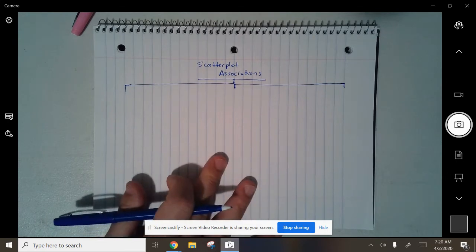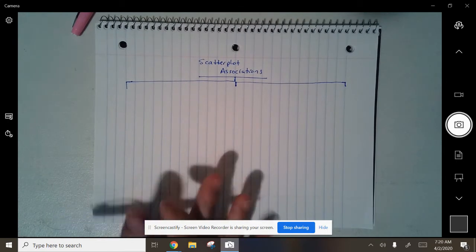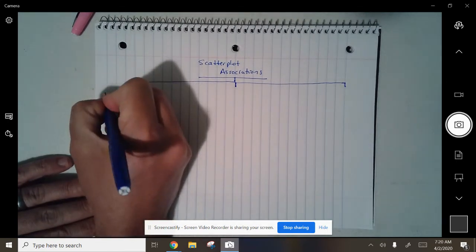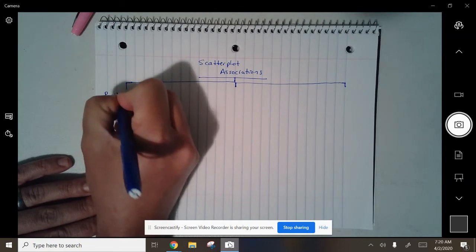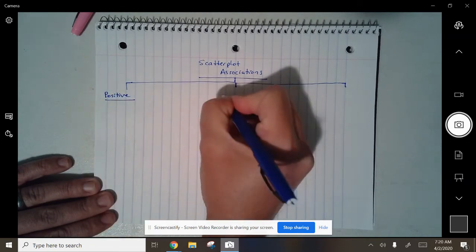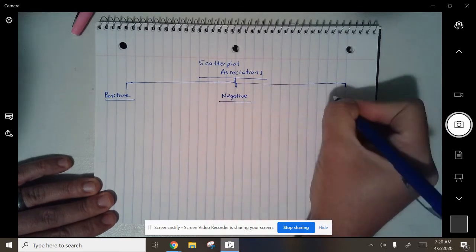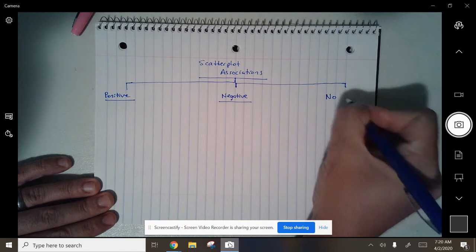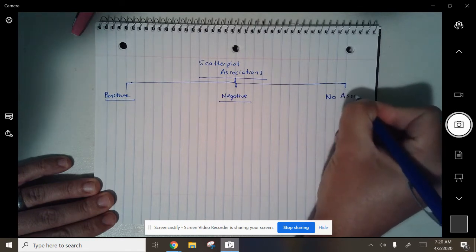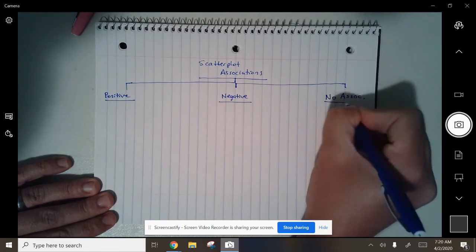So scatter plot associations. And then we'll talk about what a scatter plot is, but I'm going to name them off right now. This is a positive association, negative association, and no association. I'm going to abbreviate association right there.